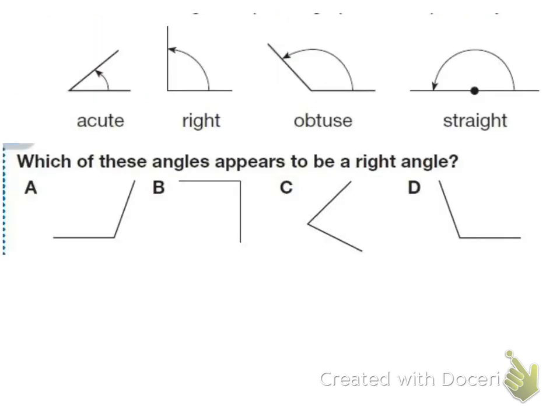When lines or segments intersect, we have angles formed. The angle is the opening in between the two lines or segments. The amount of opening can vary — some angles may be more open or less open.